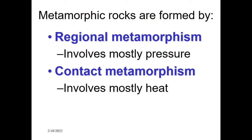The second type is contact metamorphism, where temperature or heat plays the important role. In contact metamorphism, where a pre-existing rock exists and a magmatic intrusion takes place, the pre-existing rock undergoes metamorphic changes. At the contact between the magmatic intrusion and the pre-existing rock, there will be mineral deformation, structural changes, and different orientations of minerals. Since contact occurs between the pre-existing rock and the magmatic intrusion, this kind of metamorphism is called contact metamorphism.